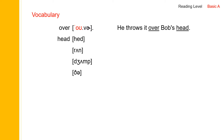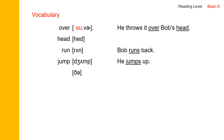Next word: run. Run spells R-U-N. Bob runs back. Next one: jump. Jump spells J-U-M-P. He jumps up.